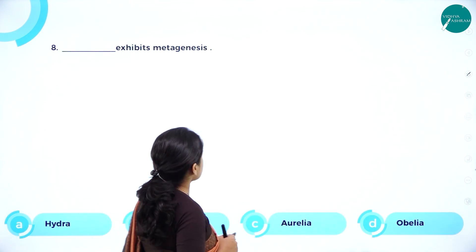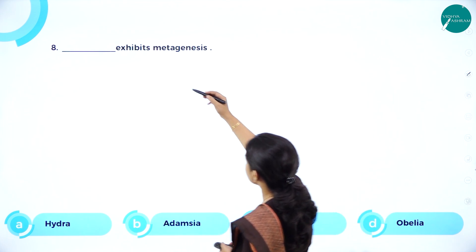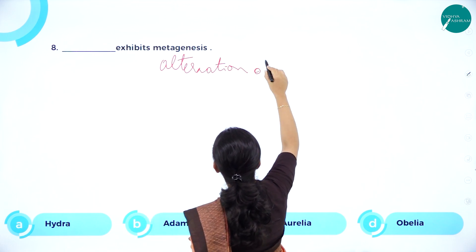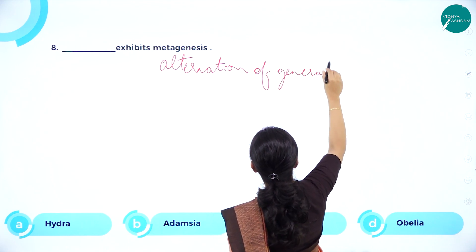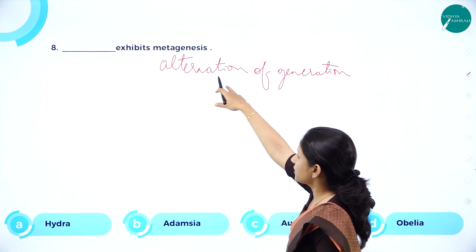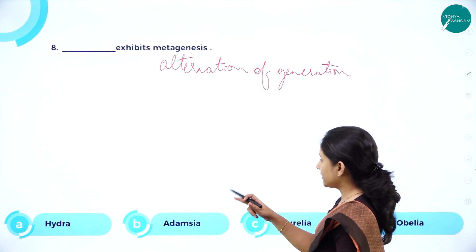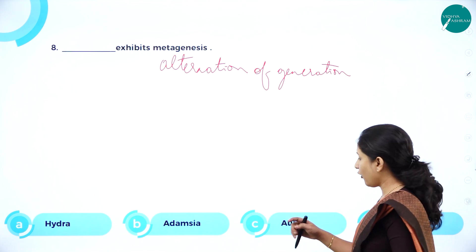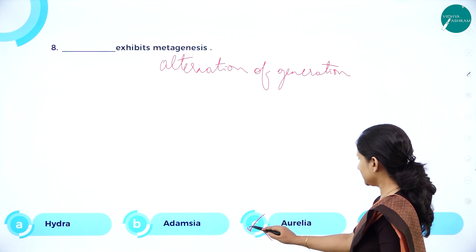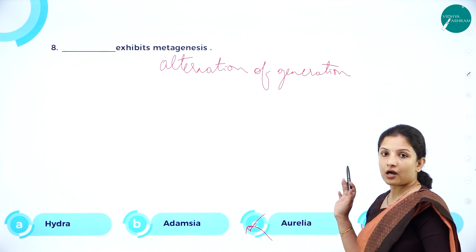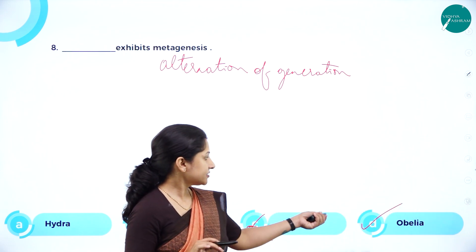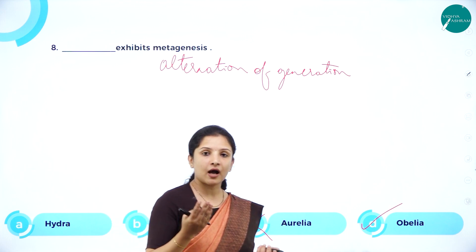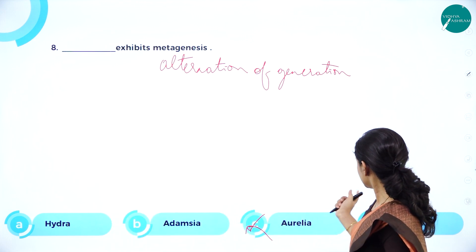Next: Dash exhibits metagenesis — or the question may be framed as: dash exhibits alternation of generation, since metagenesis and alternation of generation are the same. Options: hydra, adamsia, aurelia, or obelia? Hydra and adamsia have only the polyp body form. Aurelia has only the umbrella-shaped medusa body form. It is obelia that exhibits metagenesis — one half of its life in polyp body form, the other half in medusa body form. So the answer is obelia.